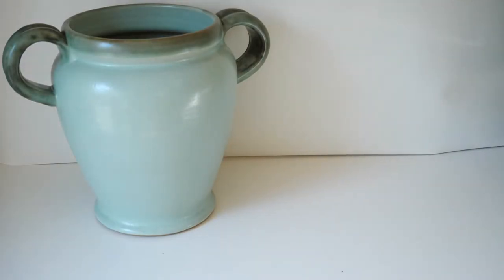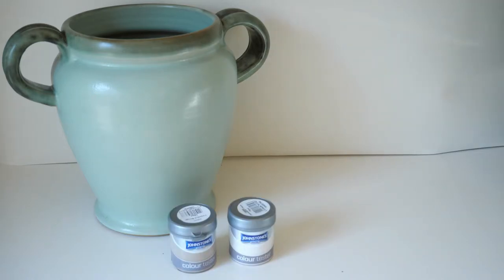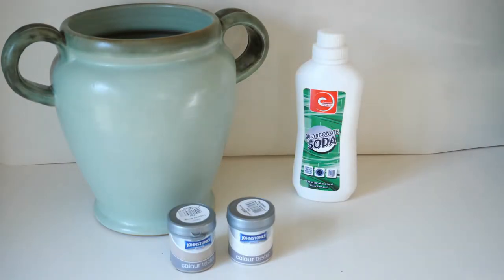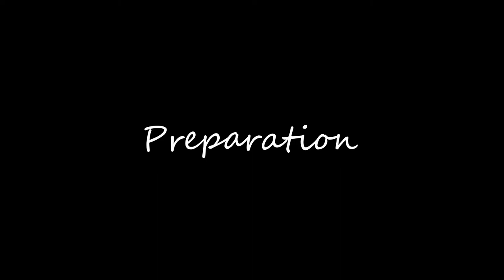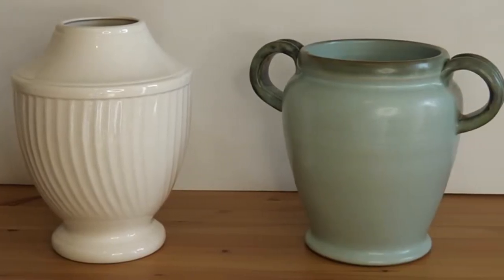So the materials you're going to need for this one are nice and simple. You need some vases, some paint—I used wool paint—you need some bicarbonate of soda, and the secret ingredient for this one is wall filler.